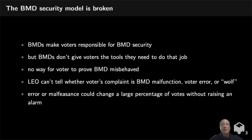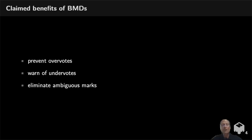There's a problem with the BMD security model in general. It basically makes voters responsible not only for their own errors but also for the overall security of the system, but doesn't give voters the tools they need to do that job. In particular, there's no way for a voter to present any other party, including an election official, with evidence that a BMD misbehaved. So if a voter complains to a local election official, there's no way for the official to know whether the complaint reflects an actual malfunction, a voter error, or a cry of wolf trying to undermine trust in the election. As a result, error or malfeasance could change a lot of votes without raising any kind of alarm.